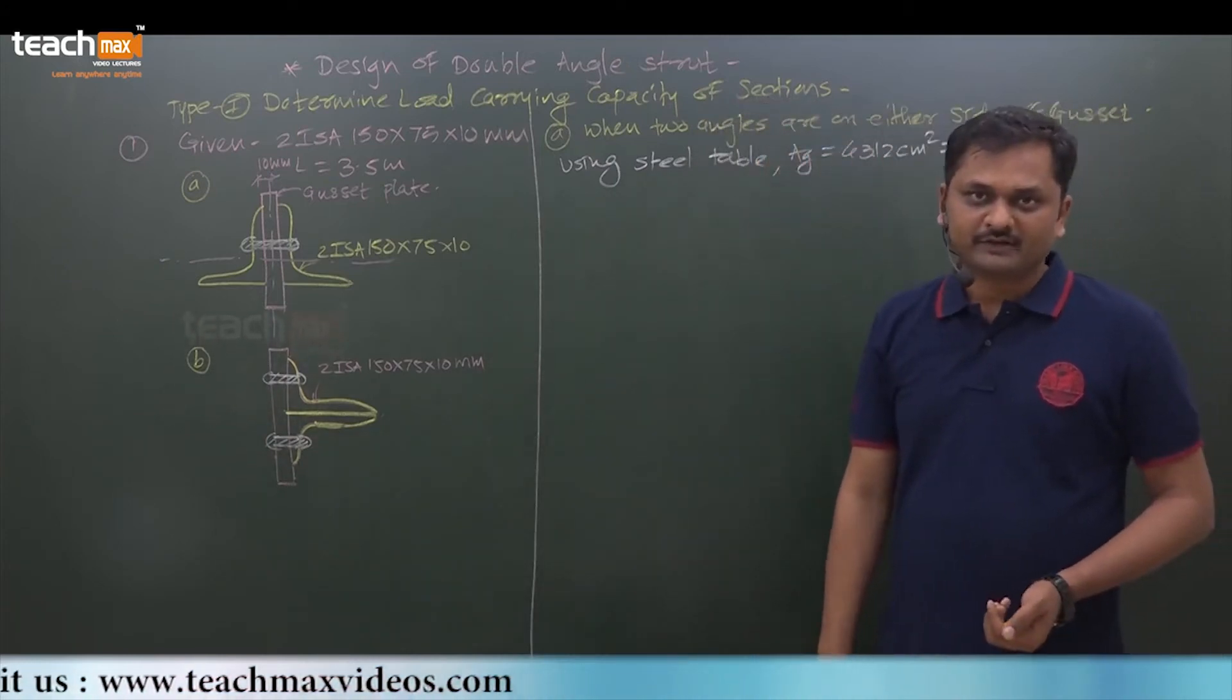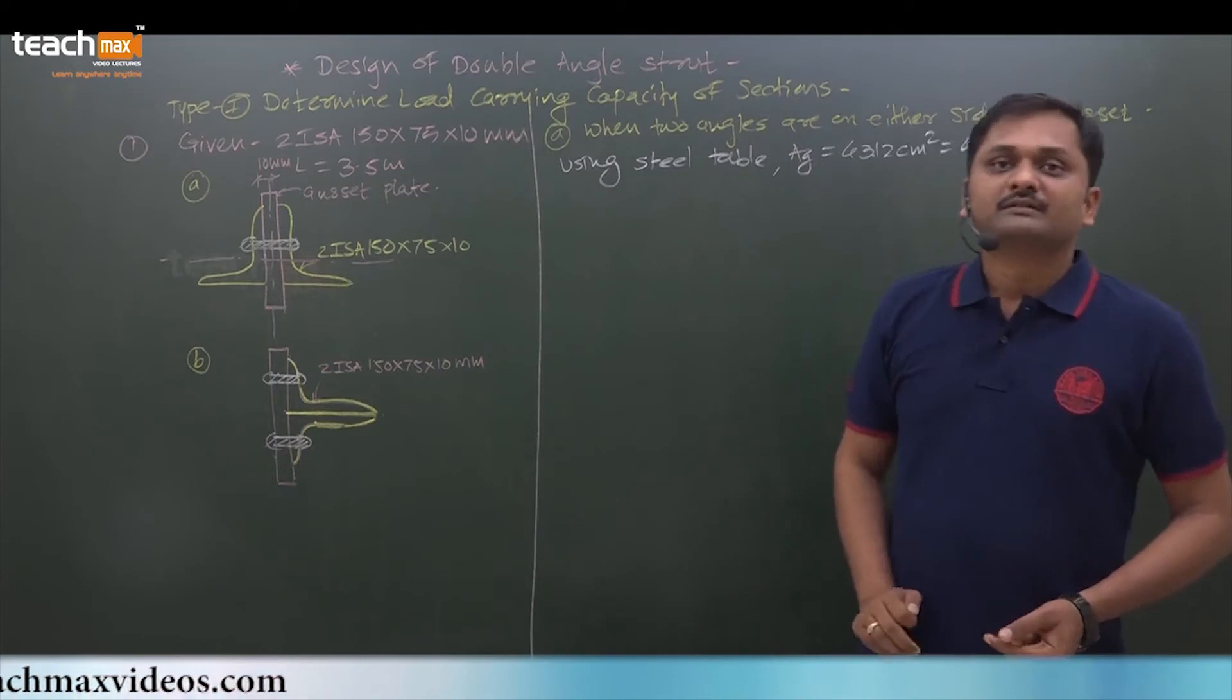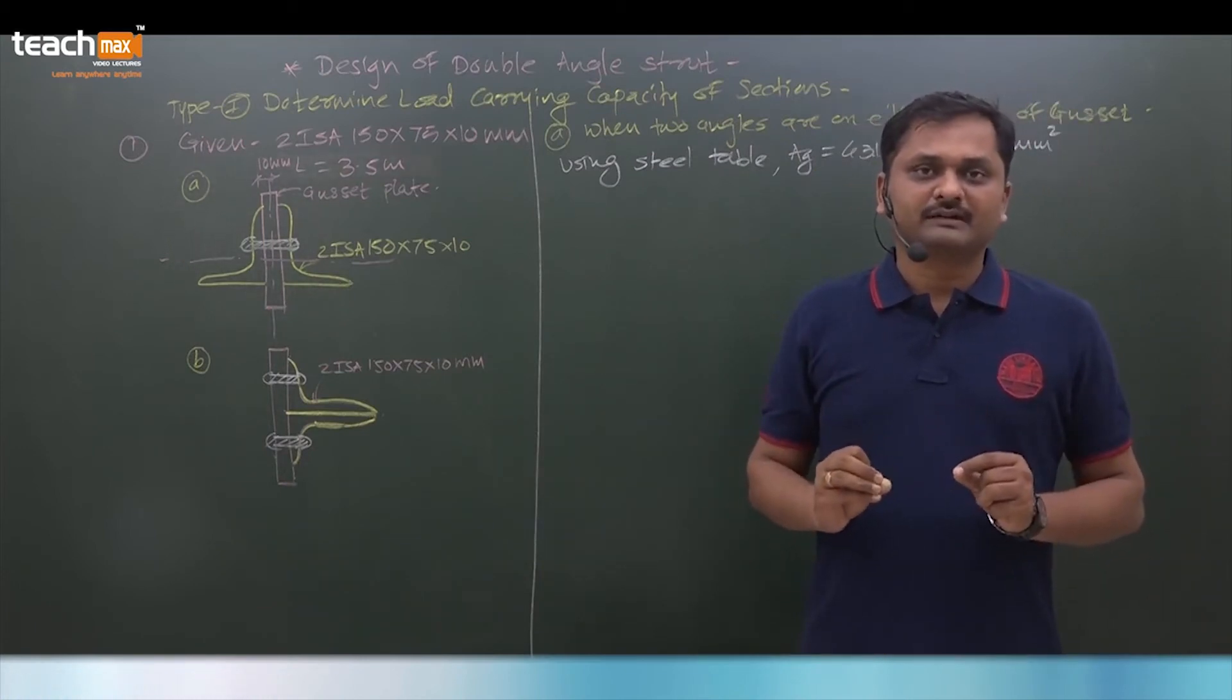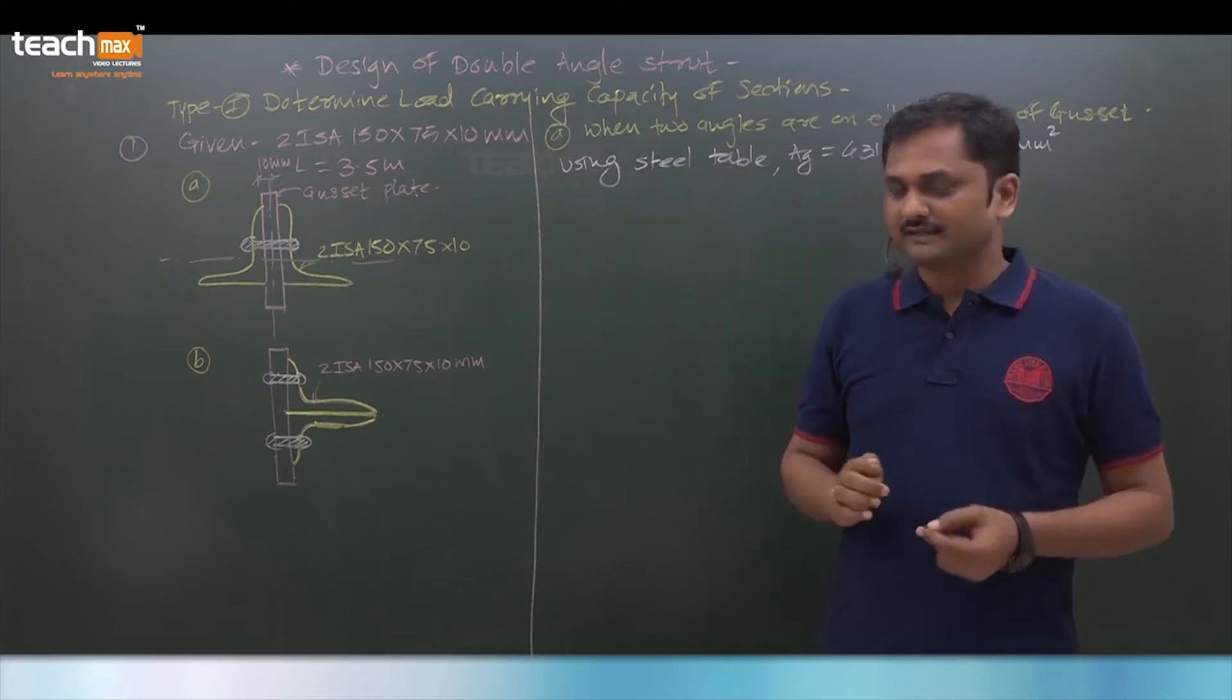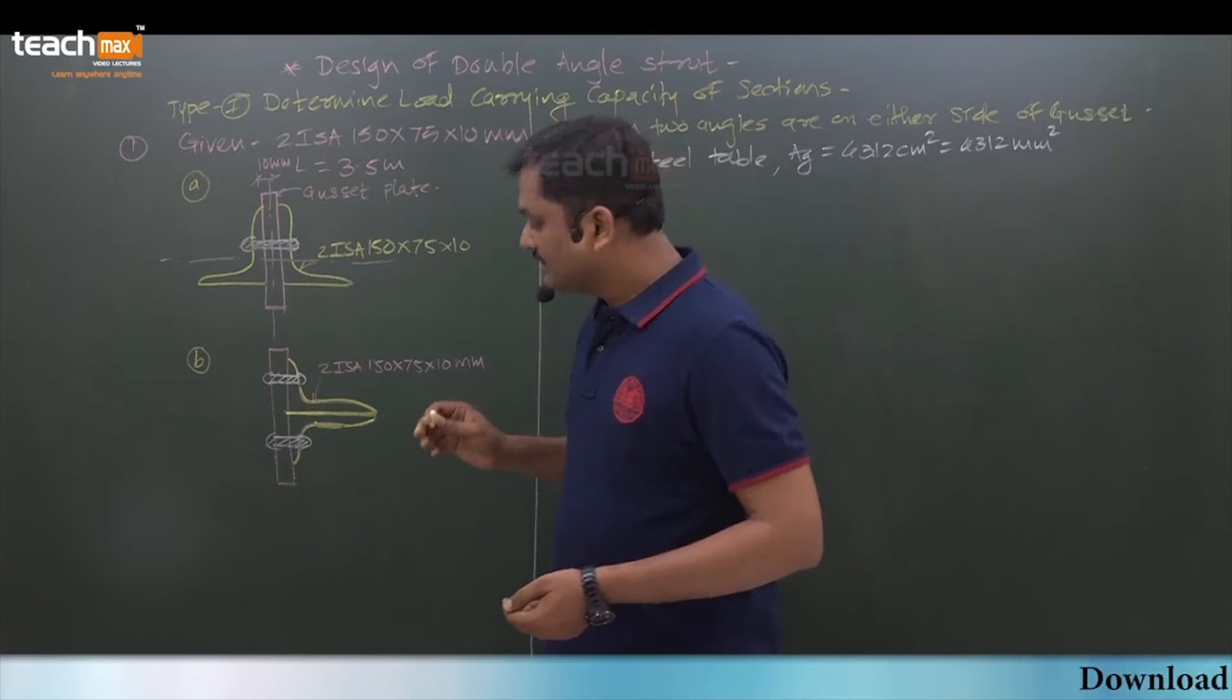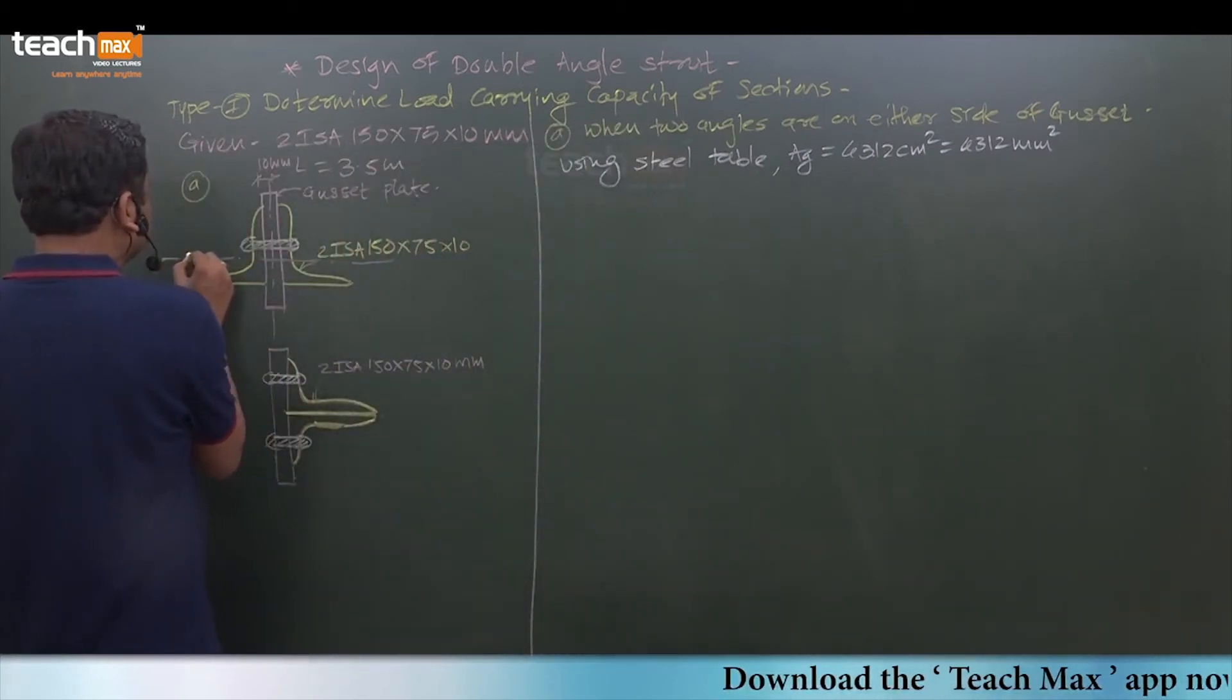Now what we require: minimum radius of gyration is also required. So rzz, ryy. Now think here, two angles are back to back.